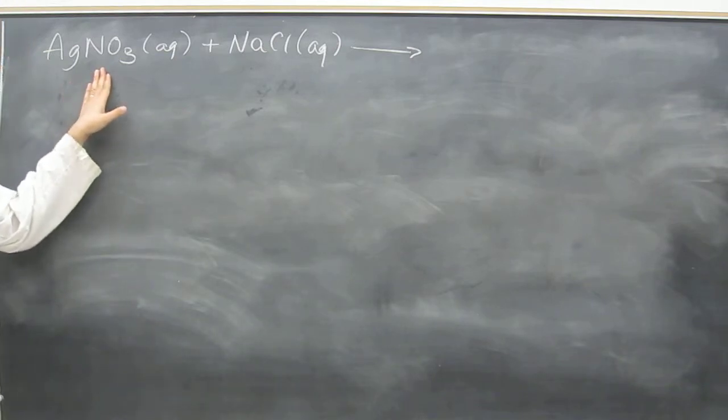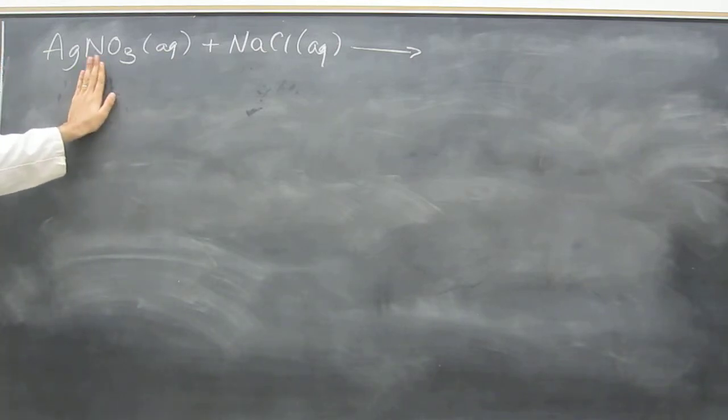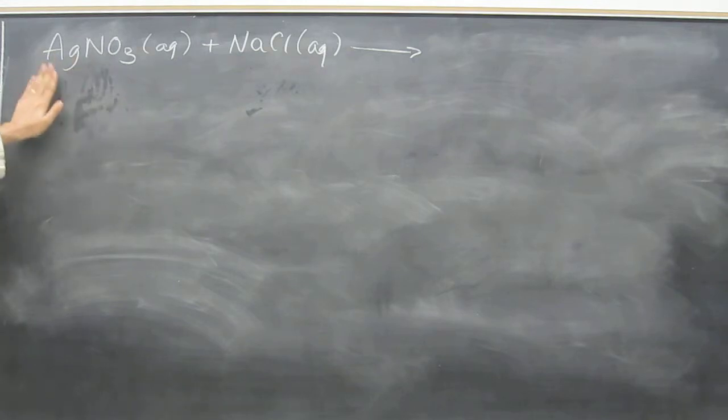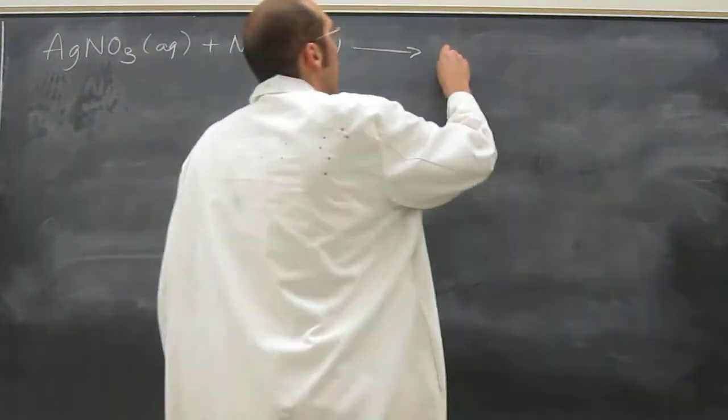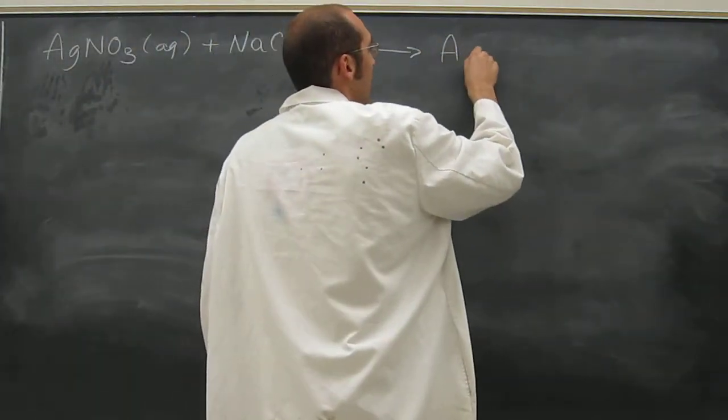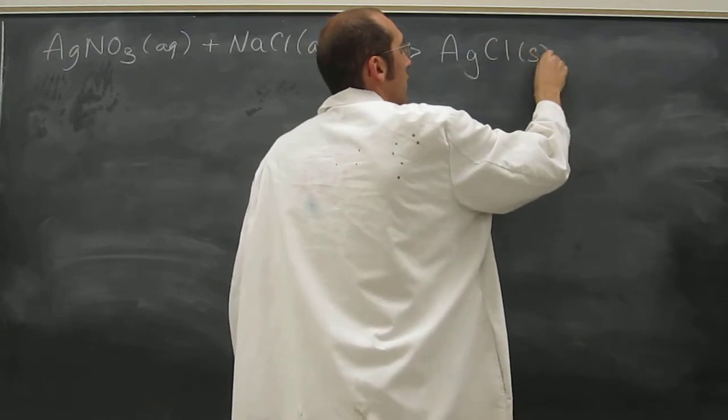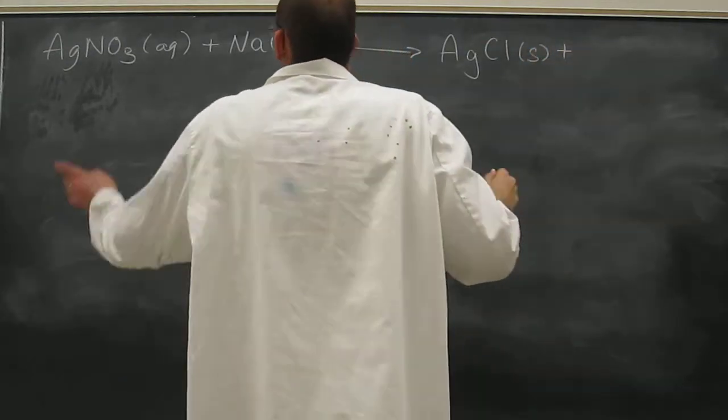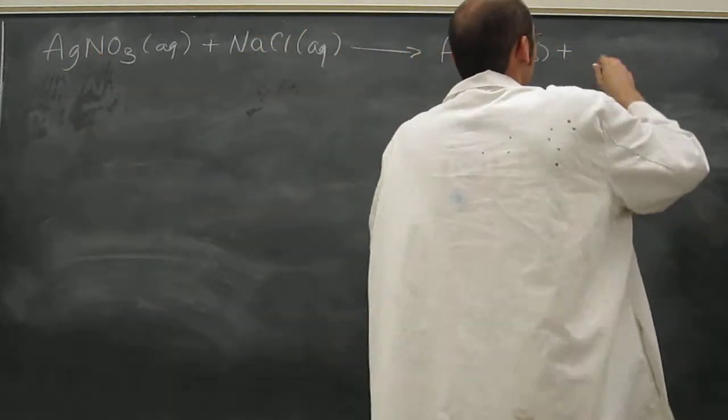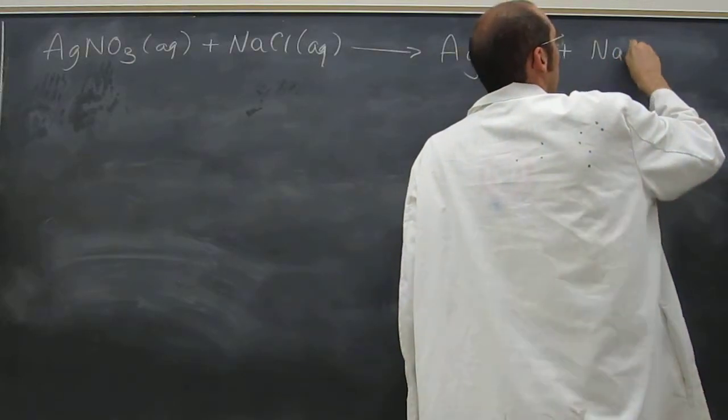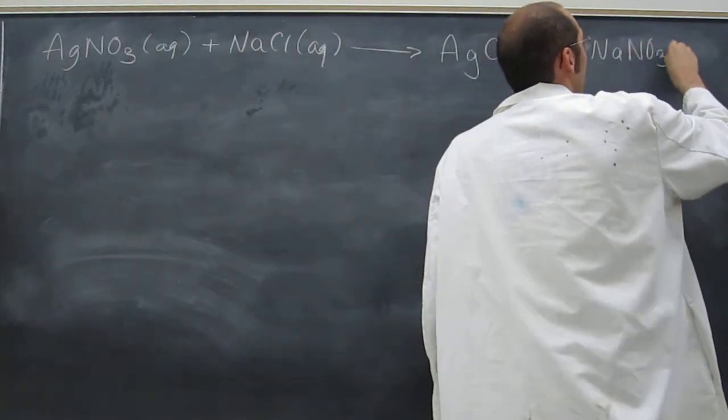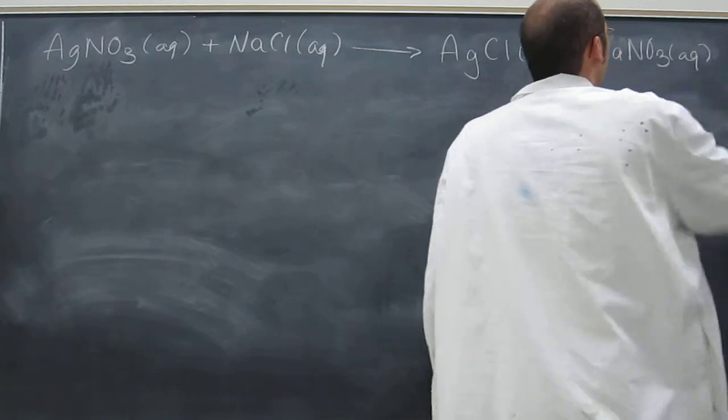The other thing is you have to know what the charge of nitrate is in order to figure out what the charge of silver is, because if you don't know that, silver is a transition metal, so you gotta figure out transition metals through their counter ion. Over here, that white solid came out, AgCl solid plus the other two, because we're doing a double displacement reaction, aqueous.